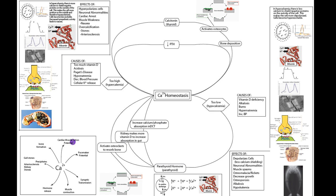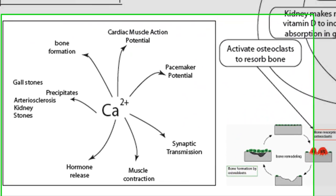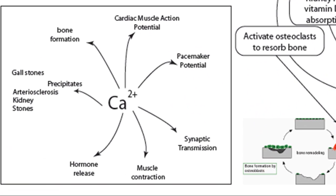Cardiac muscle action potential is also relevant. During the plateau, during phase two, calcium is entering the heart muscle cell in order to cause contraction and contractile strength. Calcium is also involved in the pacemaker potential — it enters to depolarize the autorhythmic cell, so calcium plays a huge role in setting the pace of the heart.